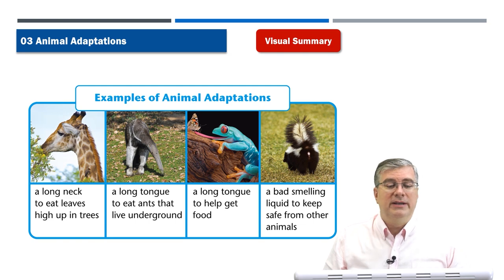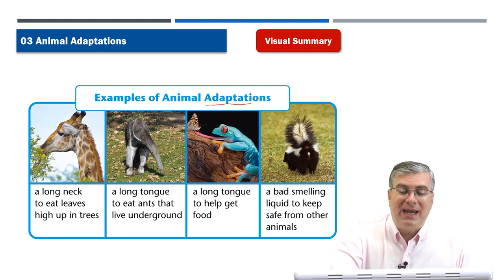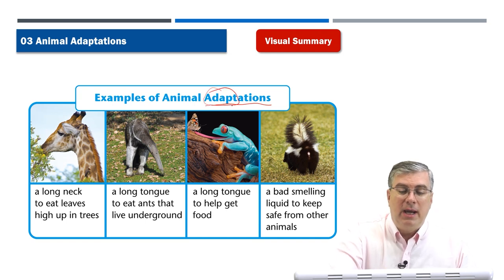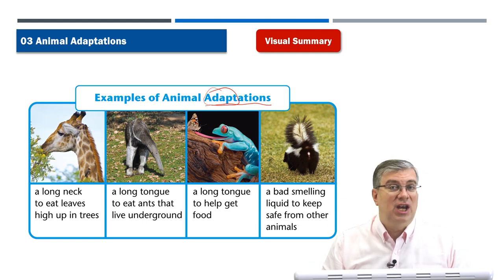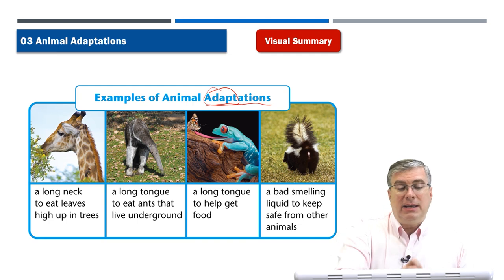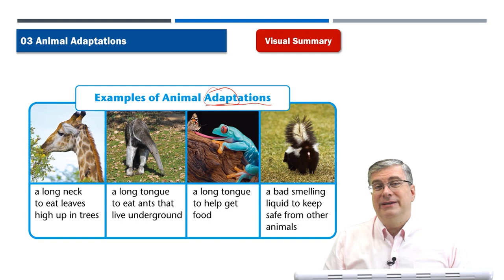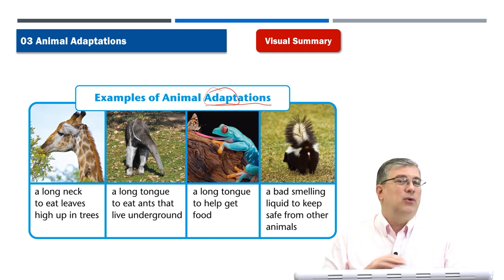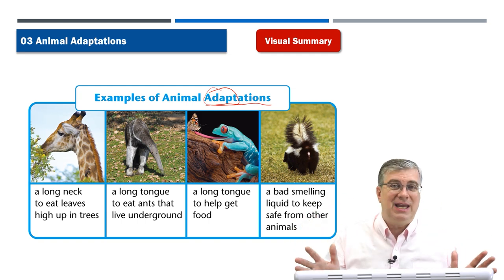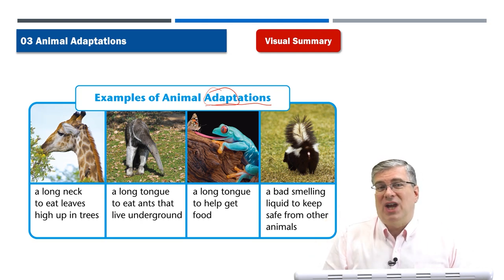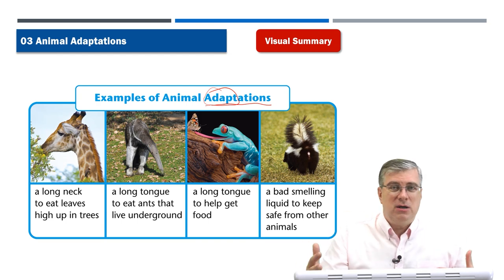So let's take a look at different examples of animal adaptations. Remember, adapt is the verb — if we want to make it a noun, we say adaptation. Adaptation is a change. We can see many different animals here — four different animals that have all adapted to their environment. Every animal that you see, including us human beings, we have all changed over millions of years.